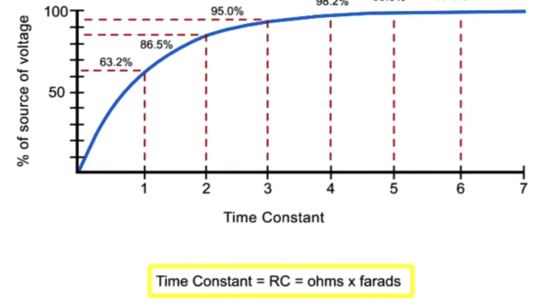A time constant in seconds is equal to the resistance of the circuit in ohms multiplied by the value of the capacitance in farads.